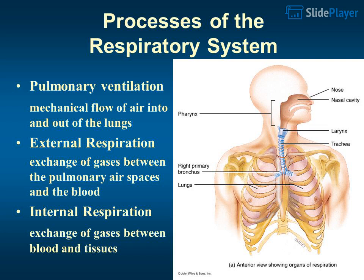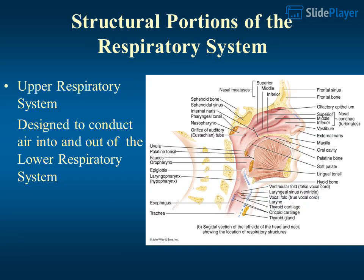The processes of the respiratory system include: pulmonary ventilation, the mechanical flow of air into and out of the lungs; external respiration, the exchange of gases between the pulmonary air spaces and the blood; and internal respiration, the exchange of gases between blood and tissues. These correspond to the structural portions of the respiratory system.